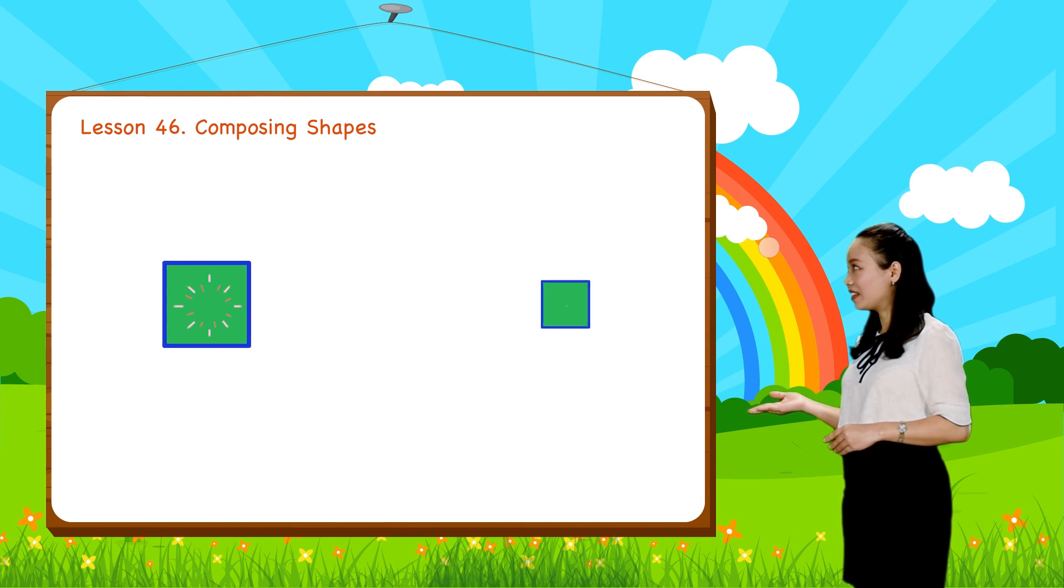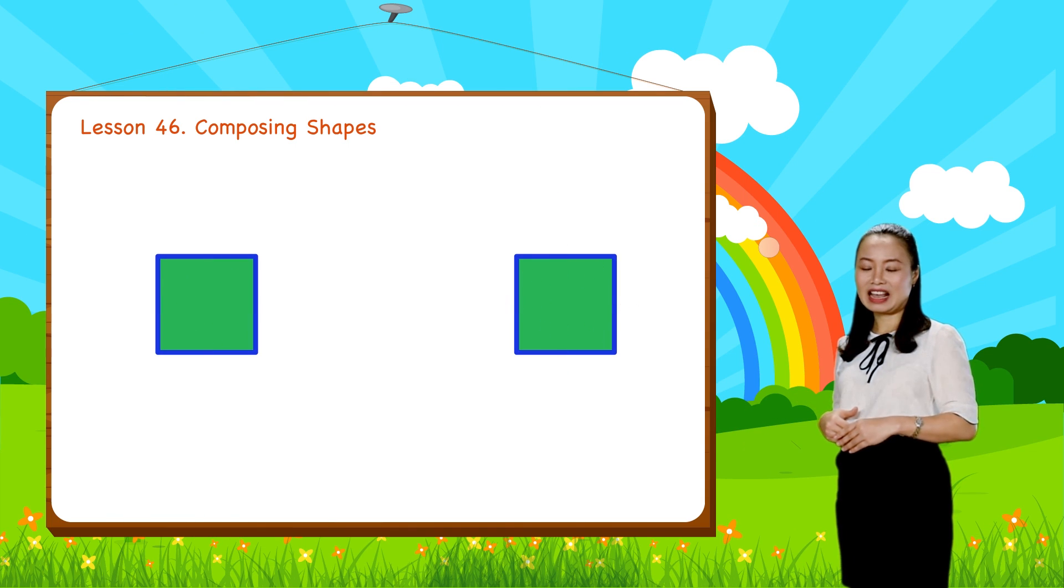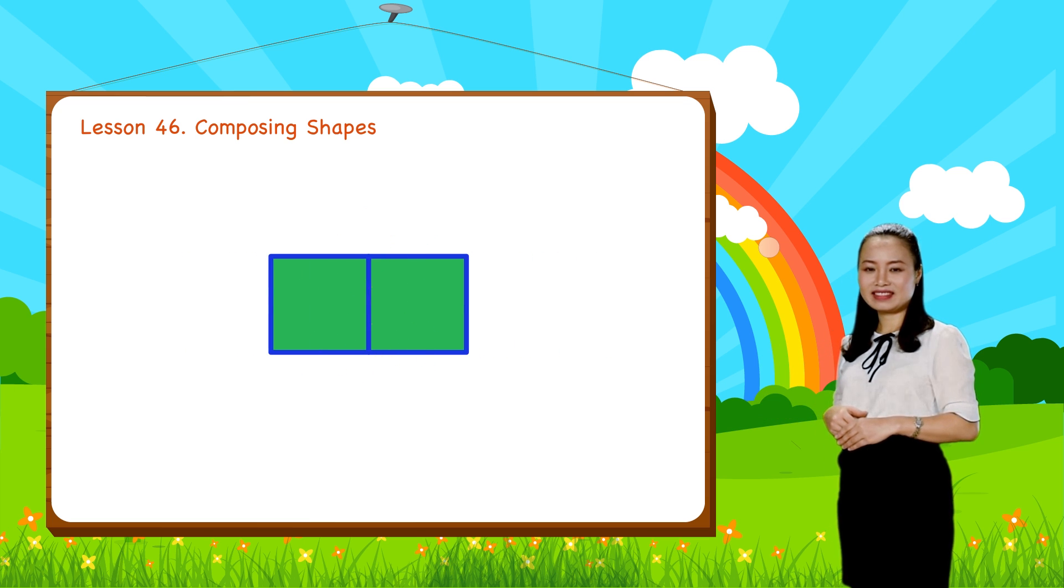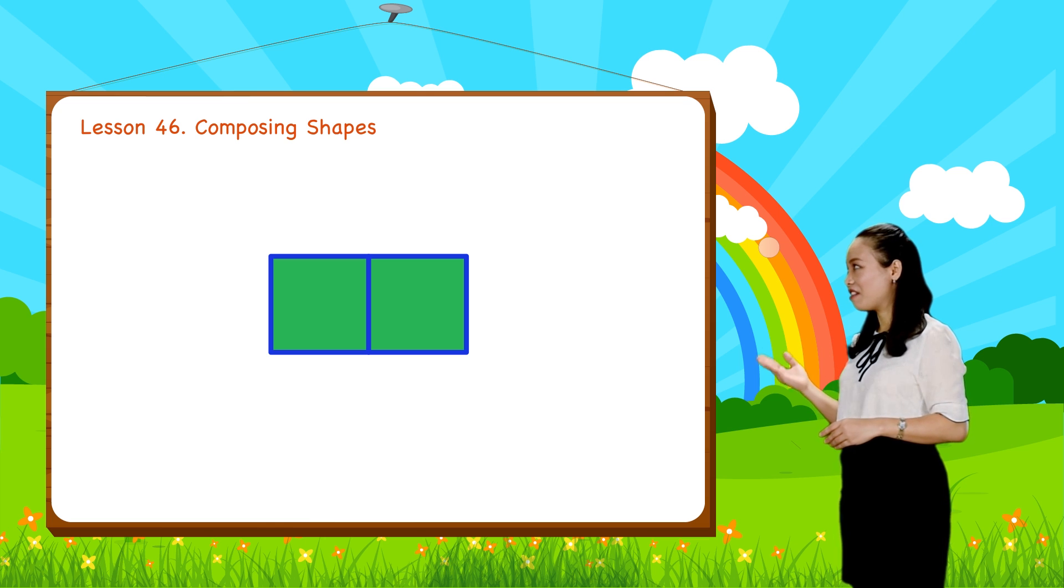Look, we can put two squares together to make a rectangle.